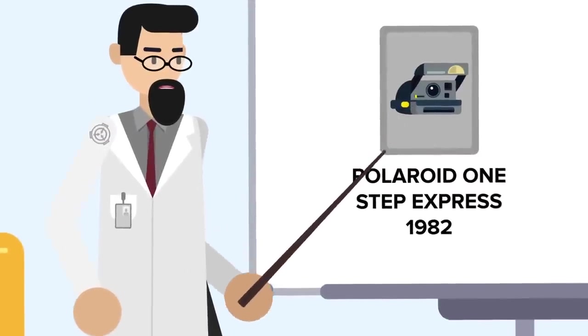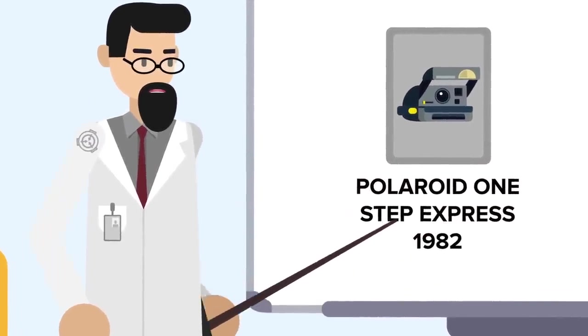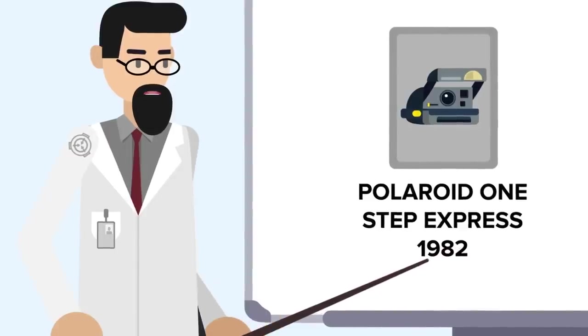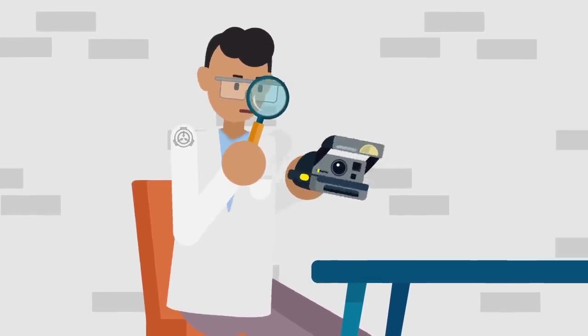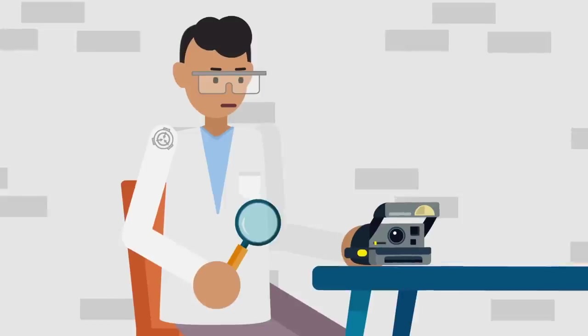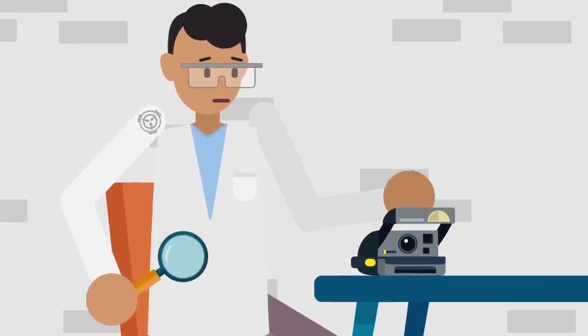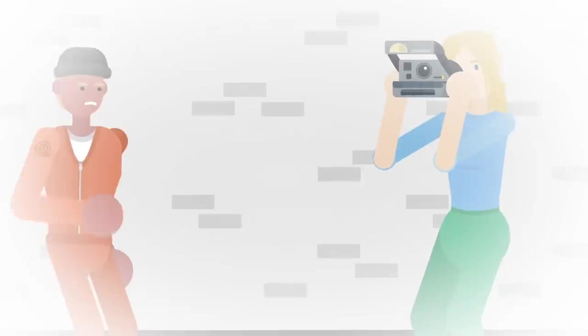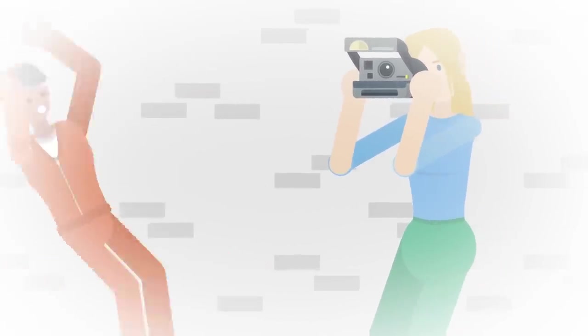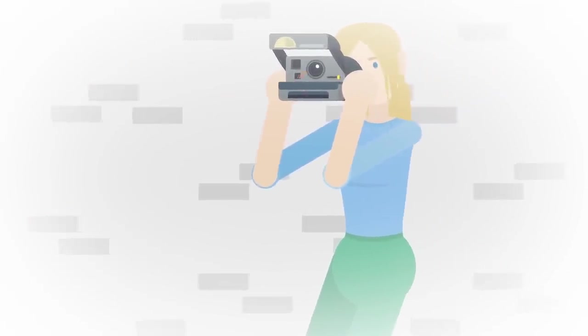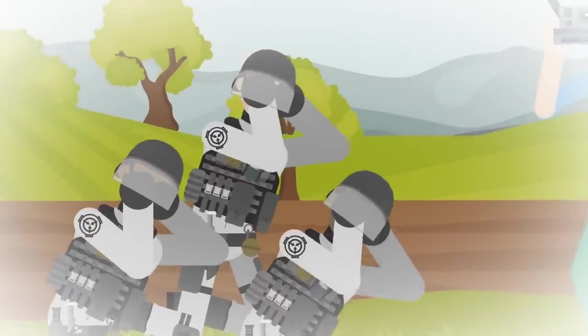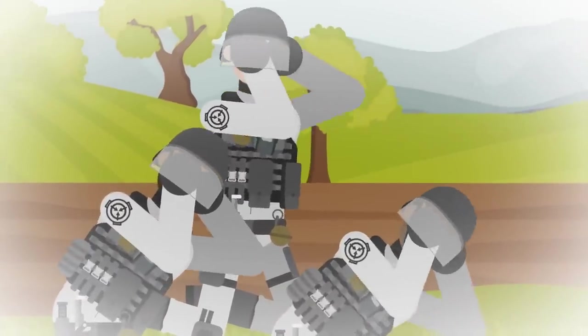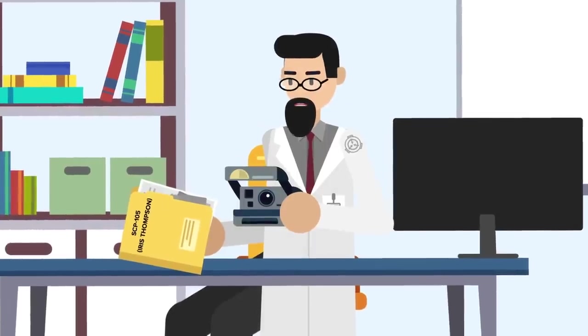SCP-105-B is a Polaroid One Step Express, manufactured in 1982. It does not appear to have any out-of-the-ordinary physical characteristics and appears to be, for all intents and purposes, a normal Polaroid camera, operating as expected for all persons aside from SCP-105. When you point it at a subject, they don't get sucked into the lens. The flash can't blind an army of soldiers. When you say cheese, it doesn't shoot out a brick of cheddar.